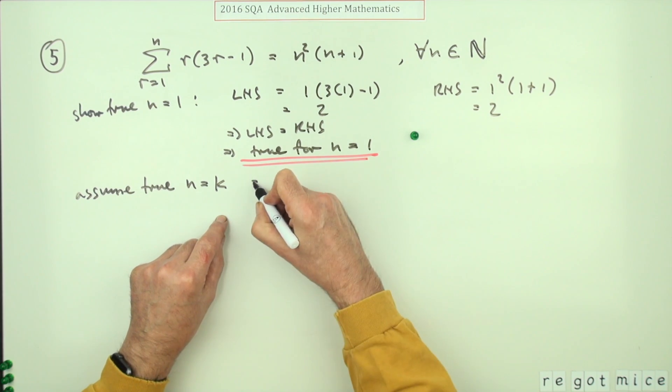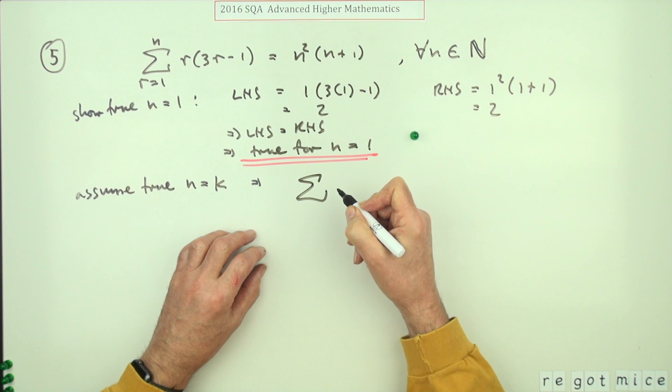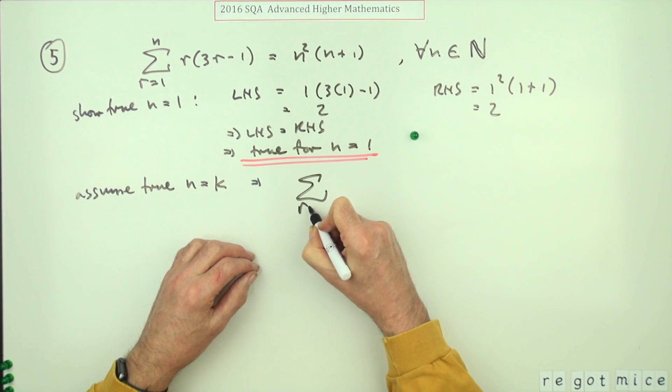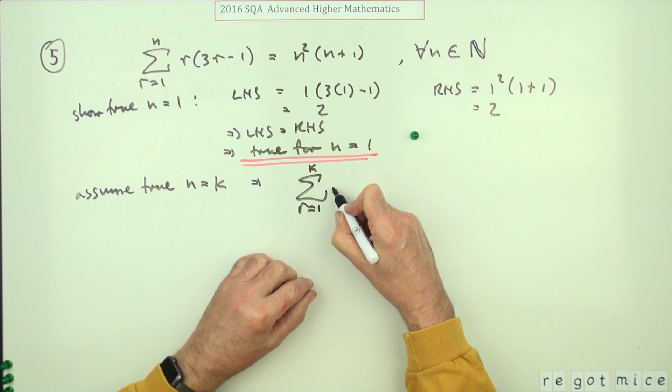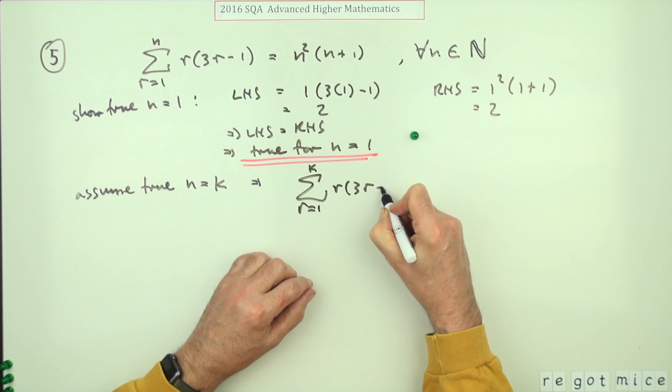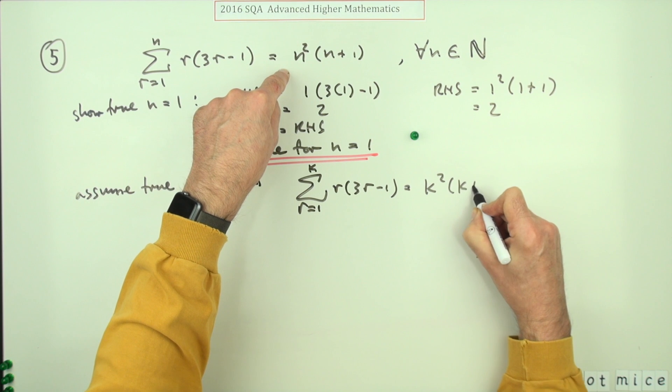Assume it's true for n equals k. Well that would mean that in this one here, you've got to write all this out. Remember it's just the n's that are getting replaced. So that'll be r is one to k, but it's still r(3r-1), but that'll be equal to k² × (k+1).